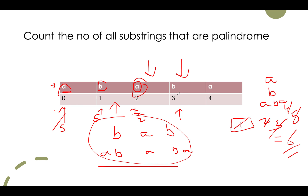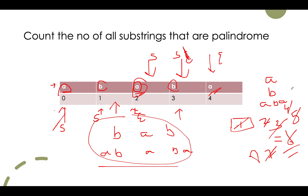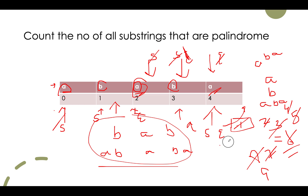Moving to the next index 'b': start and end point to it, we increment count to seven for the single character. Then start goes left and end goes right. The characters are equal — count becomes eight, giving another 'aba'. We continue: end goes out of index, process aborts. For the last index, start and end point there, we increment count to nine. End goes out of bounds, process aborts. The total number of palindromic substrings is nine.